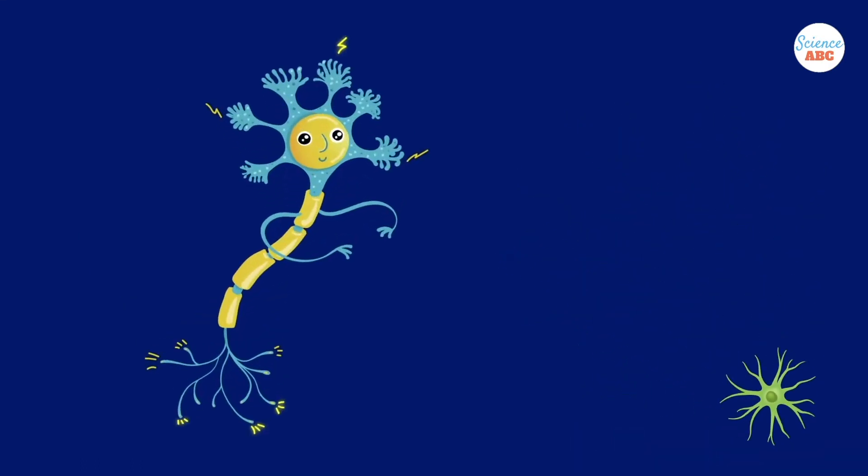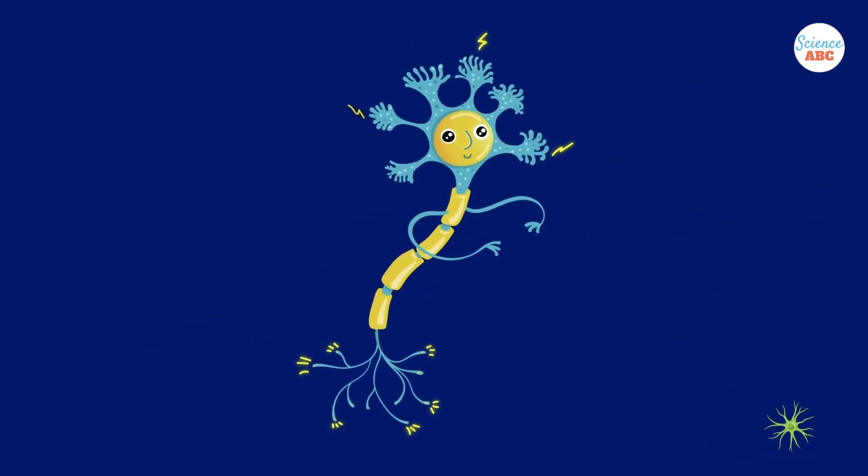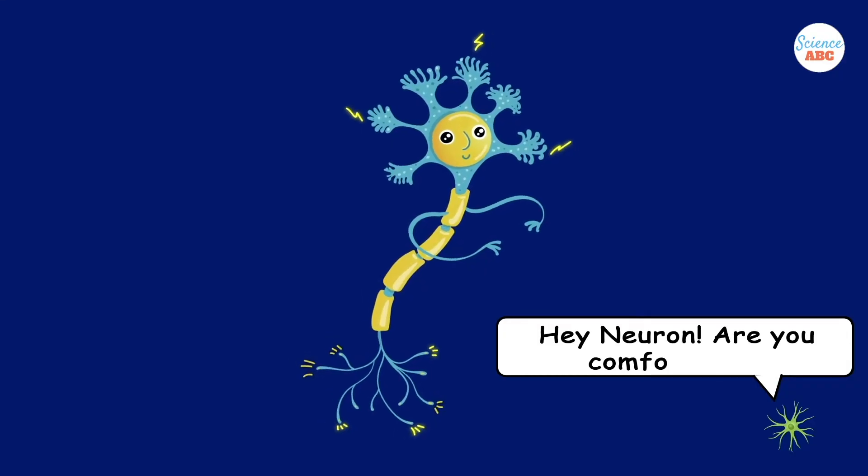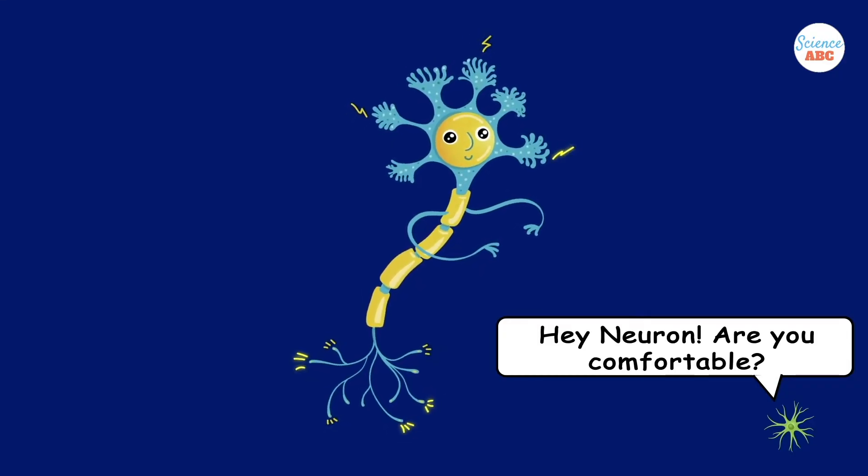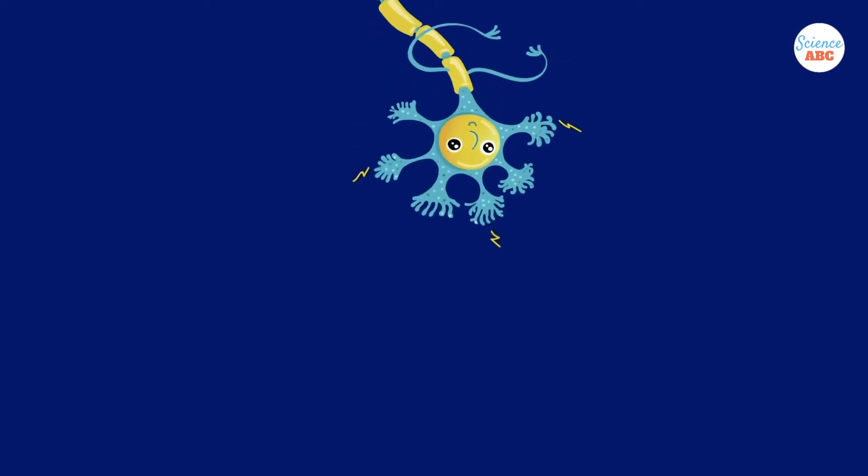For much of history, glial cells were relegated as a neuroscientific footnote. Many researchers thought that they were simple cells that merely supported the neurons, but recent discoveries are turning that idea on its head.